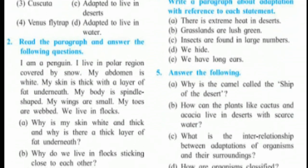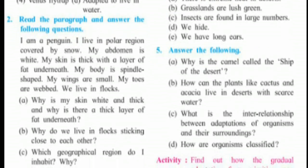Question number two: read the paragraph and answer the following questions. It's like English para reading and you have to answer based on that paragraph. 'I am a penguin. I live in a polar region covered by snow. My abdomen is white, my skin is thick with a layer of fat underneath. My body is spindle-shaped, my wings are small, my toes are webbed. We live in flocks.' From this paragraph, the animal is a penguin living in a polar region.